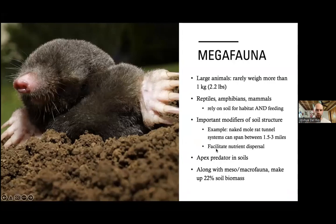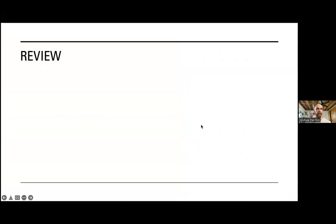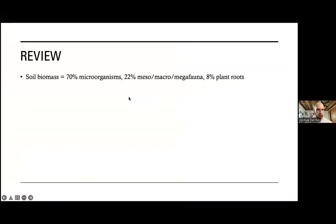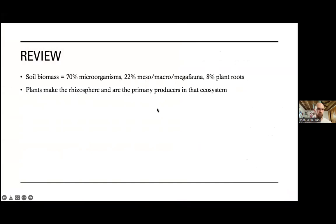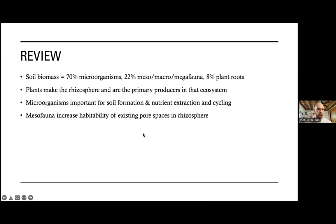Quick review of soil biomass: 70 percent are microorganisms, 22 percent are fauna (meso-, macro-, and megafauna combined), and 8 percent are plant roots. Plants make up the rhizosphere and are the primary producers. Microorganisms are important for soil formation, nutrient extraction and cycling. Mesofauna increase the habitability of pore spaces, while macrofauna and megafauna actually create those spaces and are important for nutrient dispersal.